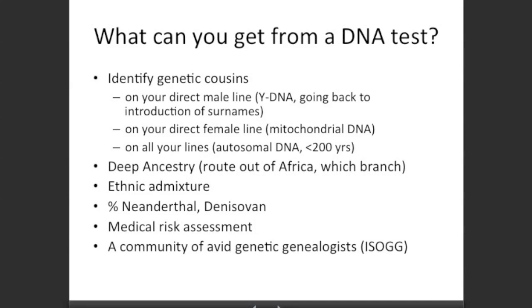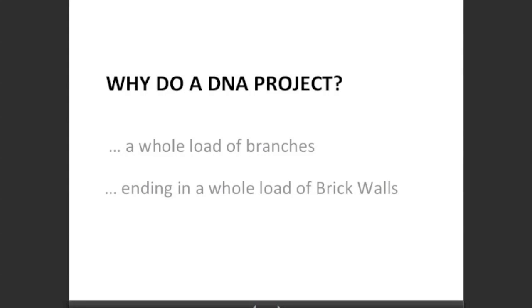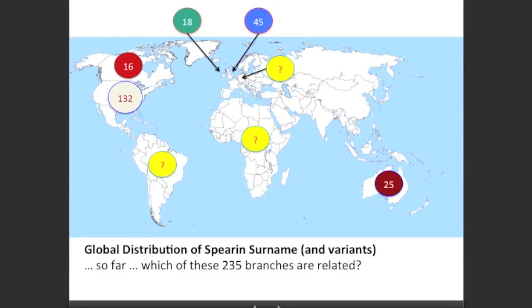The other thing you get from doing DNA tests is access to a community of avid genetic genealogists, many of whom are members of the International Society of Genetic Genealogy. But why should we do a DNA project associated with our one-name studies? Well, if you're anything like me and my study, you have a whole load of branches ending in brick walls. Here's a map of my Spearing/Sperring project — I have 18 family branches in Ireland, 45 in the UK, 16 in Canada, 132 in America, and 25 in Australia.